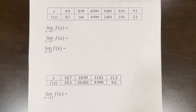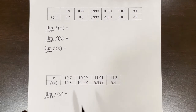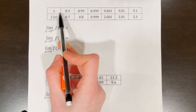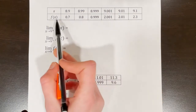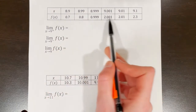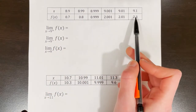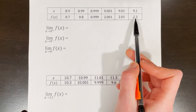To find a limit from a table, we must look at the behavior of the function without actually having the graph. Here's a table of our x values and our f(x) values for a certain function f(x).